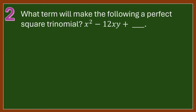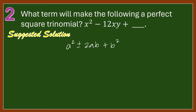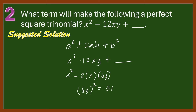Number 2: What term will make the following a perfect square trinomial? x squared minus 12xy plus blank. A perfect square trinomial is of the form a squared plus or minus 2ab plus b squared. Here, x stands for a, giving x squared. Then negative 12xy stands for negative 2ab, which can be expressed as negative 2 times x times 6y. So b stands for 6y. To make this a perfect square trinomial, we square 6y and get 36y squared.